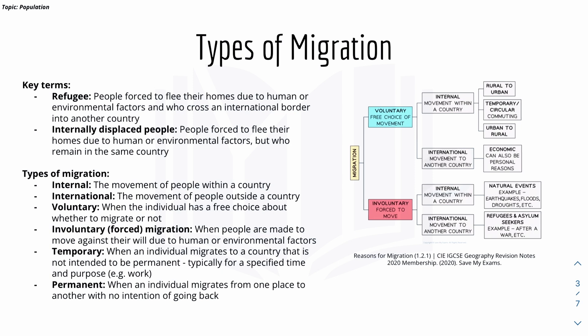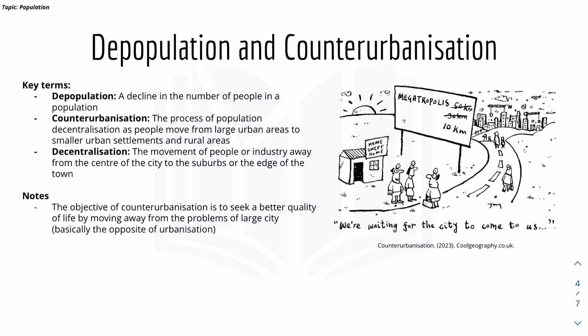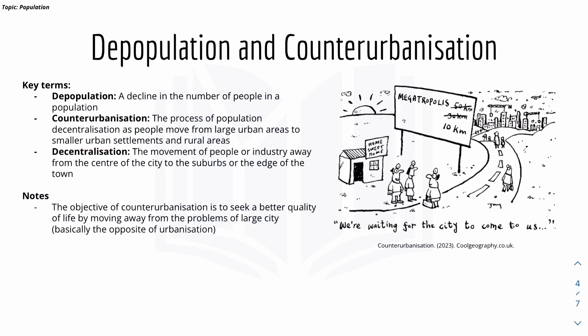There's temporary migration and permanent migration due to work or education. Then we have depopulation and counter urbanization. Depopulation is a decline in the number of people in a population. Counter urbanization is the process of population decentralization, as people move from large urban areas to smaller urban areas and rural areas.